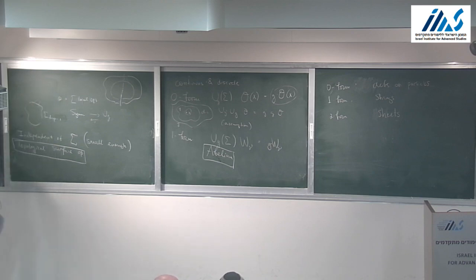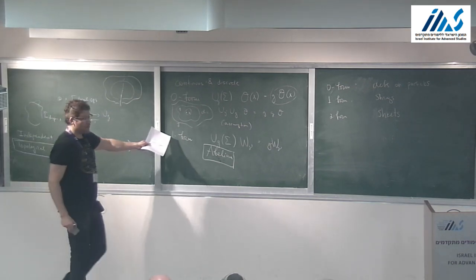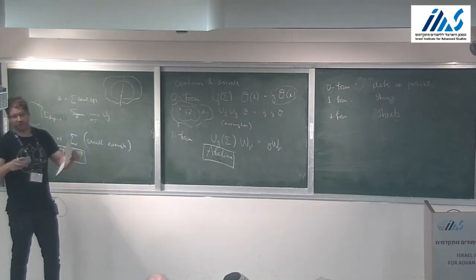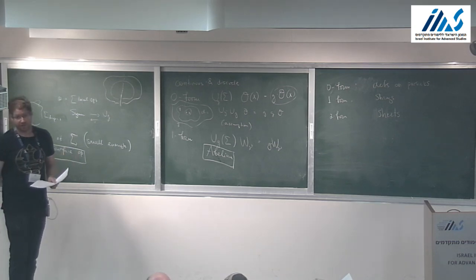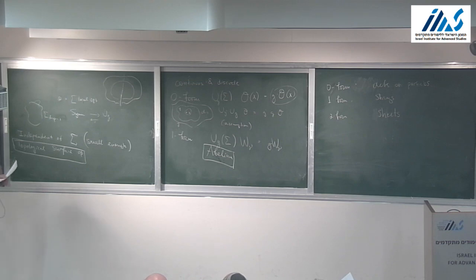The fact that one-form symmetries act as an abelian group is actually true in any dimension, not just three. Co-dimension two surfaces can contract onto a line independently of each other in any dimension. So for any one-form or higher-form symmetry, the group acts as an abelian group.